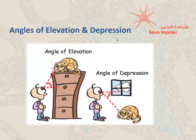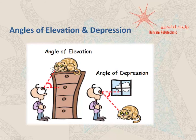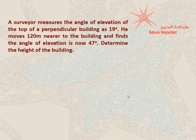Angles of elevation and depression. If you're looking at something above your eye level, the angle which is formed between the eye level and the thing which is on top is called the angle of elevation. On the other side, if you're looking at something which is below your eye level, then the angle between the eye level and the thing at the bottom is called the angle of depression. Let's take some practical problems on angles of elevation and depression.